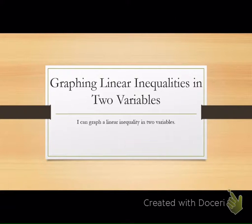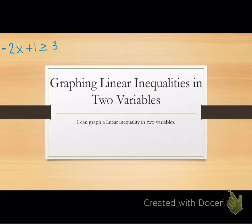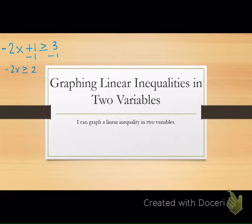A one-variable inequality is something like this. You had an equation like 2x plus 1 is greater than or equal to negative 2x plus 1 is greater than or equal to 3. It's one variable because there's literally one variable in there. We'd subtract 1 on both sides and divide by negative 2. When you divide by negative 2, what did you have to do? Flip the inequality. So we have less than or equal to negative 1.